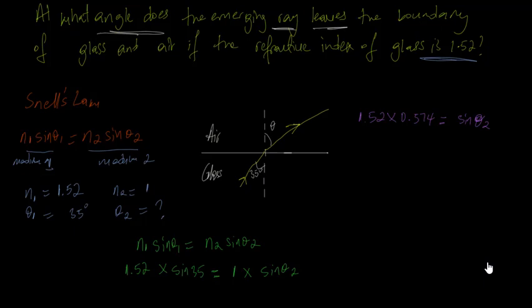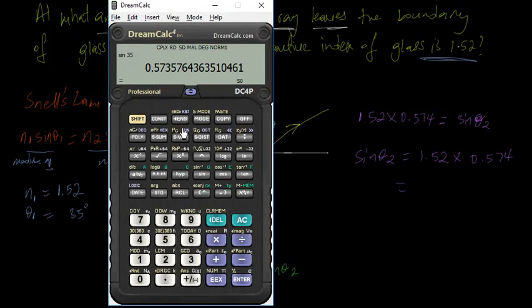Okay, so we can use the calculator to find the value of this side here. Let me rewrite this, put sin θ on the left side. So I'll say sin θ₂ is equal to 1.52 times 0.574. So using our calculator, let me just clear and then say 1.52 multiplied by 0.574.